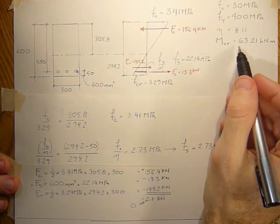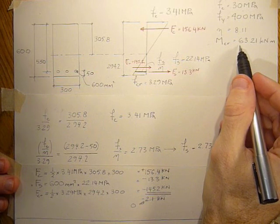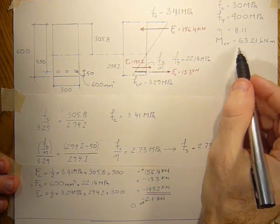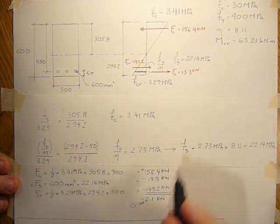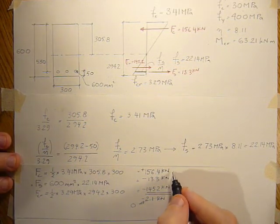And now let's see if we can get this cracking moment. So we used MY over S to get the cracking moment previously. Now we're going to sum these forces about the neutral axis.